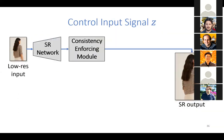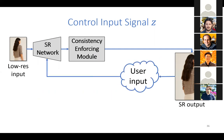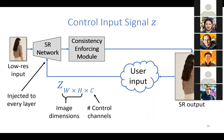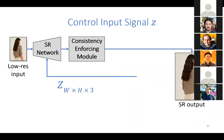We also need a control input signal so the user can manipulate the output. We inject the control signal Z into each layer of our network to promote faster training. Z is a three-dimensional signal with spatial dimensions corresponding to the output image dimensions, which allows local editing — if you want to edit a specific region, you only manipulate the part of Z corresponding to that area. Z has C channels; in this implementation we use three channels, for reasons I'll explain shortly.